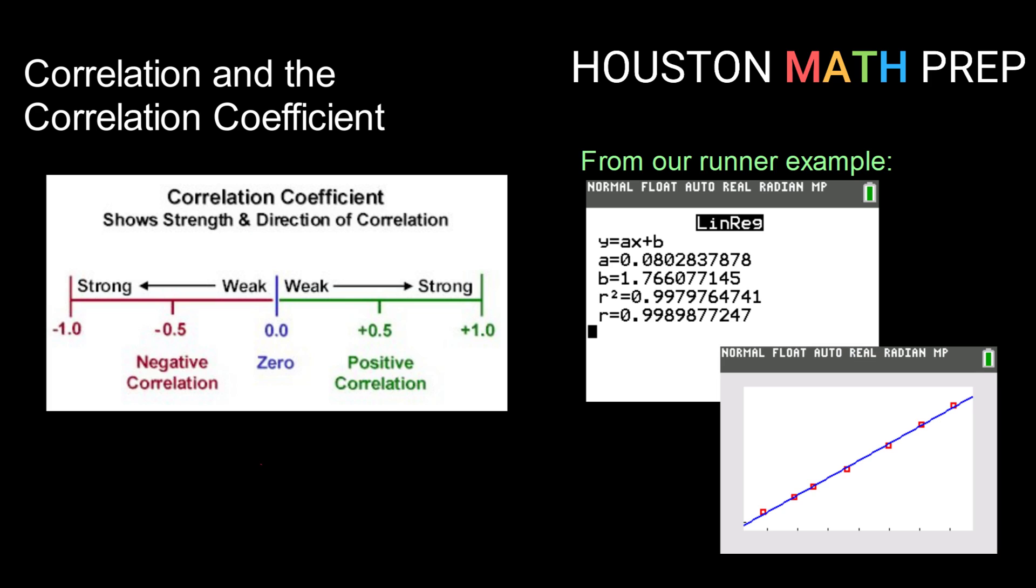So again, correlation coefficient is going to be our numerical measure of how strongly related our data values are in a linear fashion. So correlation coefficient is a measure that is between negative 1 and 1. And correlation coefficient is usually r is the variable that we use for that. Correlation coefficient not only tells us the strength, it also tells us the direction of our correlation. So a positive correlation will have a positive correlation coefficient. A correlation coefficient at or near zero is going to be no correlation or a very, very weak correlation. The closer that we get to 1, the stronger our correlation gets in the positive direction.